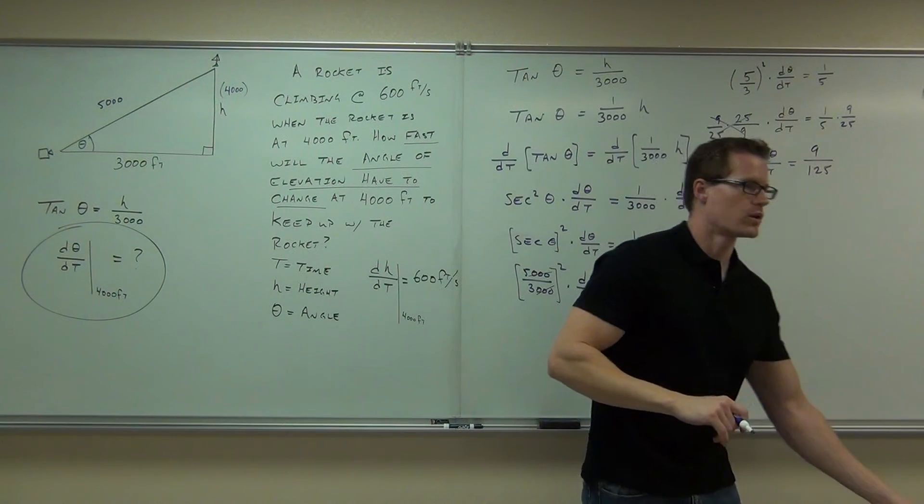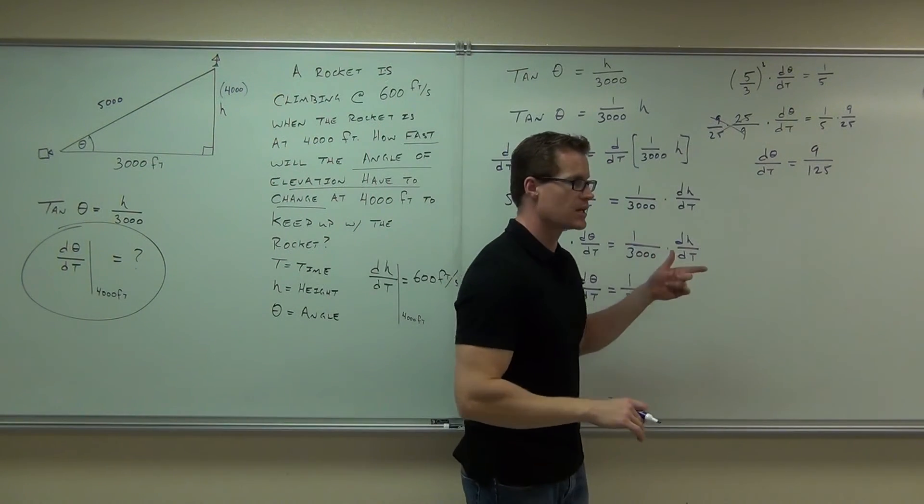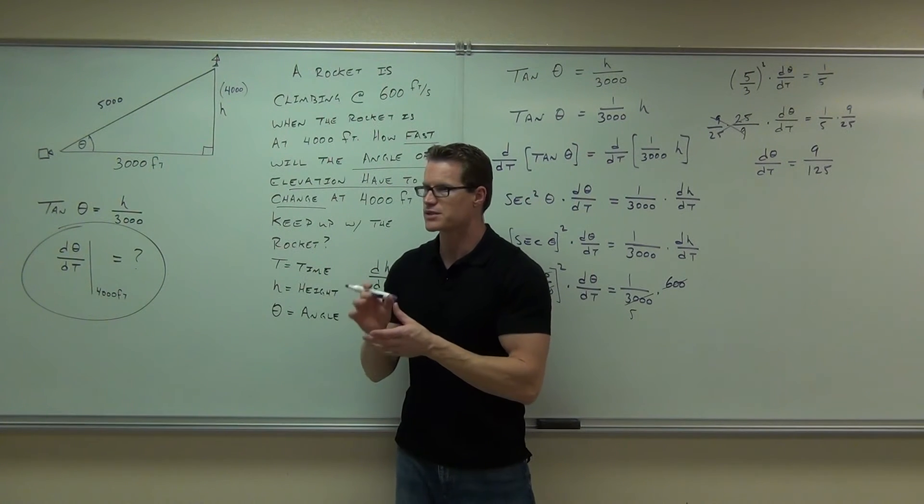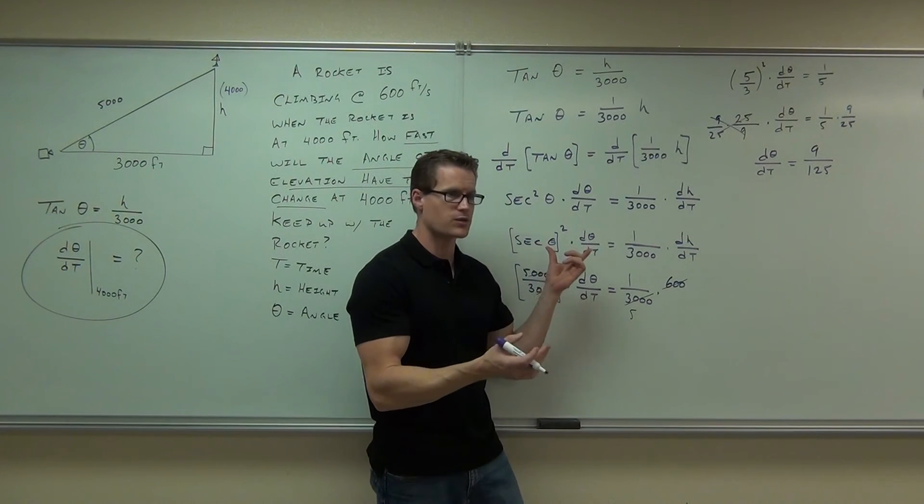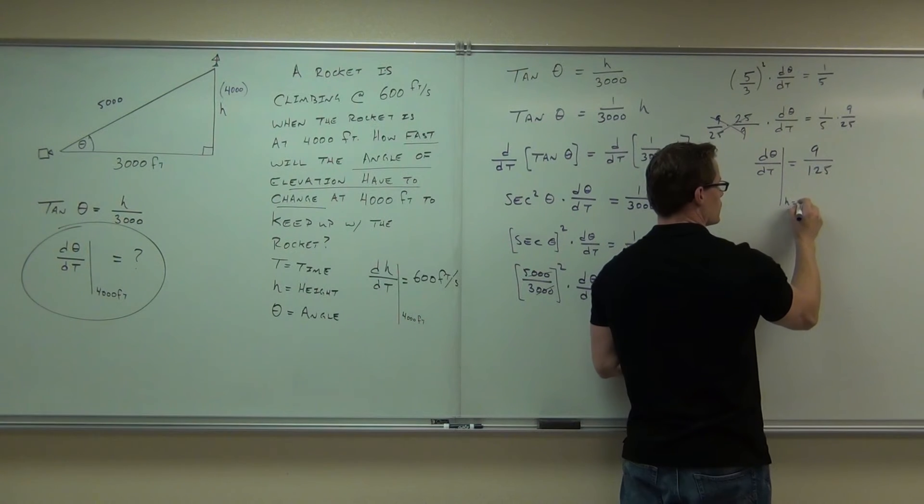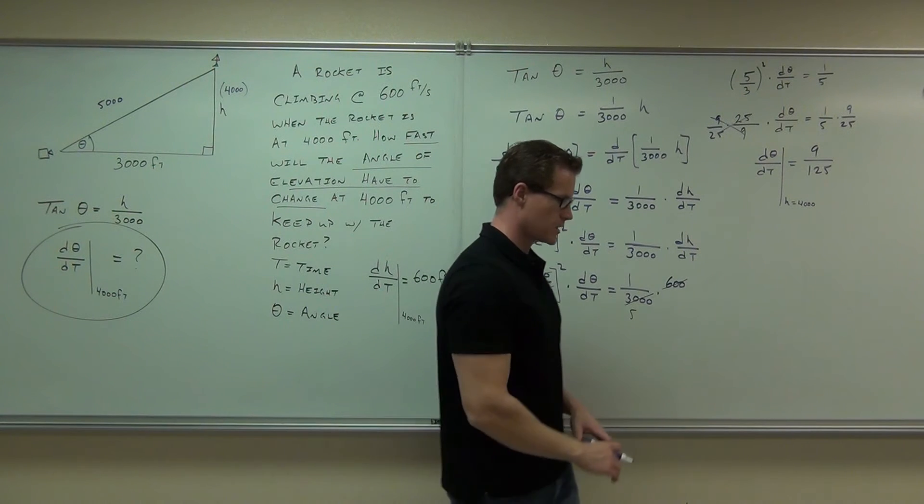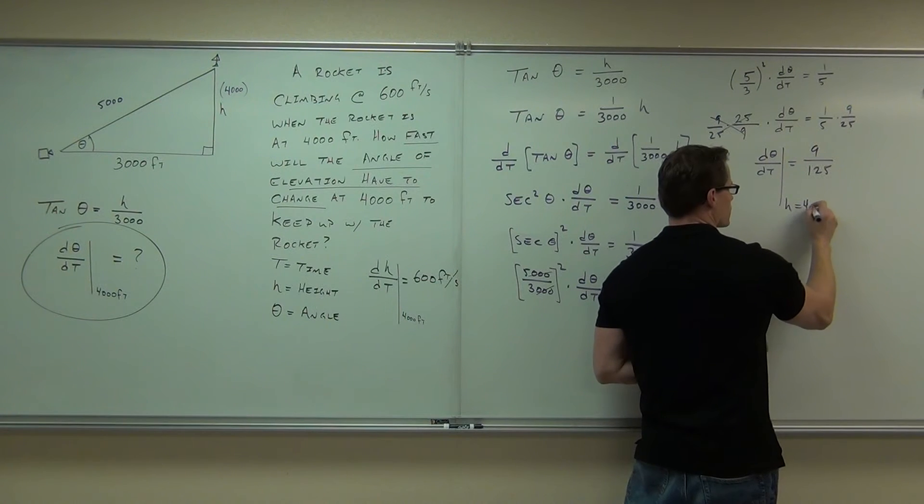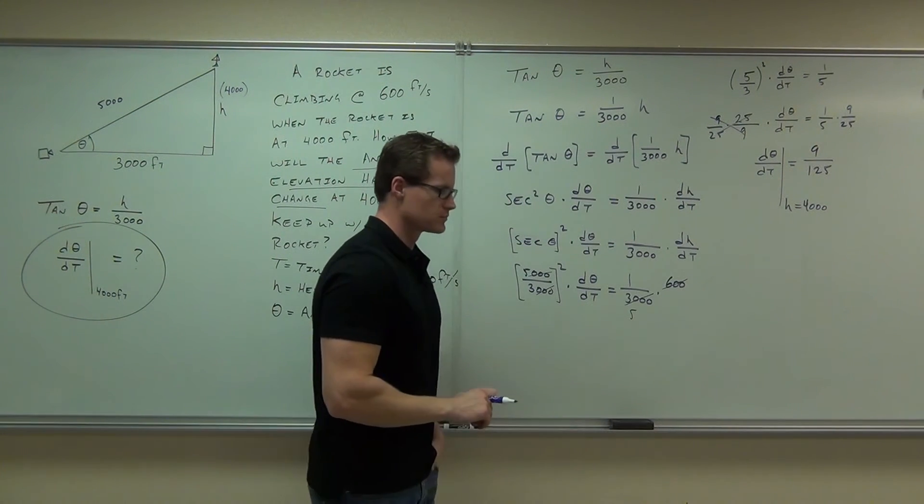I'm going to get d theta dt equals 9 over 125. And keep in mind, all of this happened when the height was 4,000. That's how we came up with our secant. That's how we came up with this thing as well. So it was dependent on that height. The 600 feet per second only worked for a height of 4,000. The secant theta only works for a height of 4,000. That's the specific distance we were at, specific height. So that was when the height was 4,000.